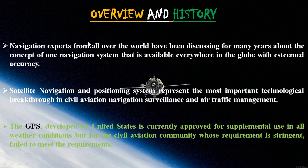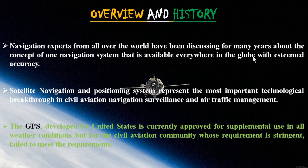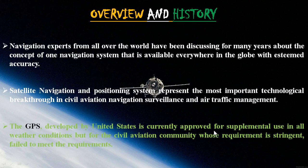Navigation experts from all over the world have been discussing for many years the concept of one unified navigation system. The US has GPS, Russia has GLONASS, and the European community is developing another one. The goal is a single navigation system available everywhere on the globe with high accuracy. Satellite navigation and positioning represents the most important technological breakthrough for civil aviation, navigation, surveillance, and air traffic management. GPS, delivered by the United States, is currently approved for supplemental use in all weather conditions, but for the civil aviation community with very stringent requirements, GPS is not fully meeting those requirements.